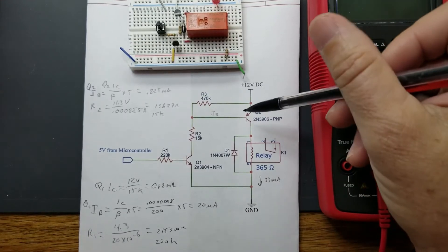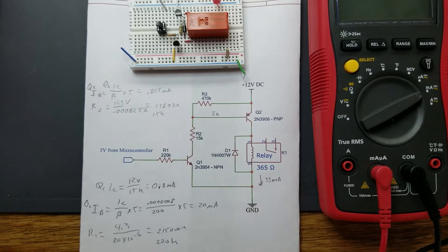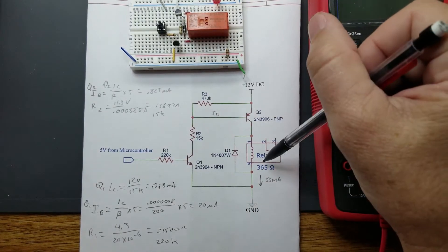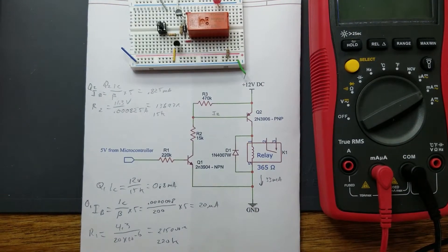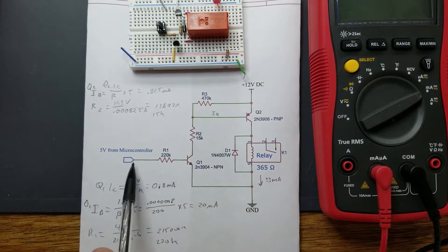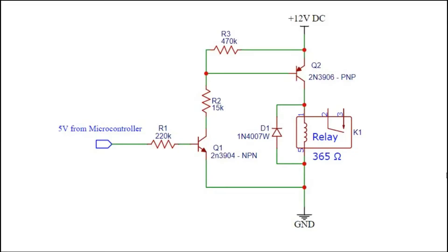This is a dual-stage relay driver circuit which has several advantages. One of them being that it protects the microcontroller from the higher current relay circuit. Also, the relay shares a common ground as far as the design of the circuit. This has a lot of gain, so it requires very little current from the microcontroller to turn this relay on.